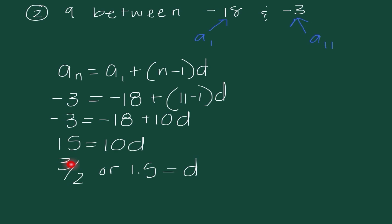So now we need to find what those 9 values actually are. So negative 18 plus 1.5 would be negative 16.5, negative 15, negative 13.5, negative 12, negative 10.5, negative 9, negative 7.5, negative 6, negative 4.5. And then that would bring me back to negative 3. So once again, if I put these 9 arithmetic means in between these 2 numbers, it would give me an arithmetic sequence. It makes sense that our numbers are getting larger because our common difference is a positive number here.